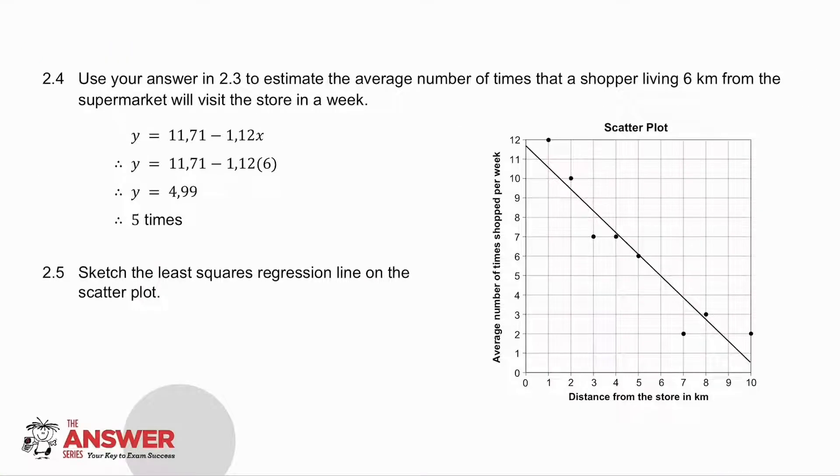2.4 says use your answer to estimate the average number of times that a shopper living 6 kilometers from the supermarket will visit the store in a week. So I use the equation I've worked out, and in place of X, I put 6, and I get a Y value of 4.99. In other words, they will visit the supermarket five times in the week.